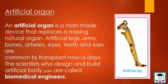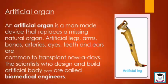Ab dekhte hain artificial organ kya hota hai. An artificial organ is a man-made device — yeh ek insaan ki bani device hai — that replaces a missing natural organ. Artificial legs (masnoo'i taang), arms (baazoo), bones (haddiyan), arteries (khoon ki sharyanen), eyes (aankh), teeth (daant), and ears are common to transplant nowadays.